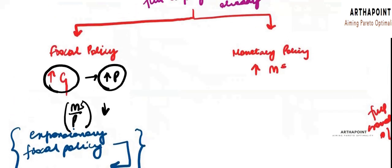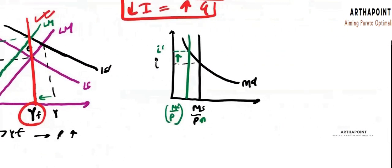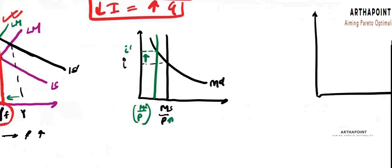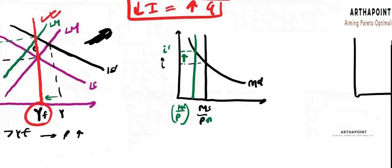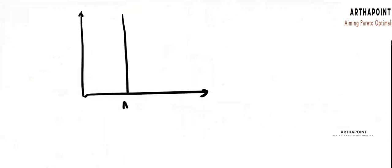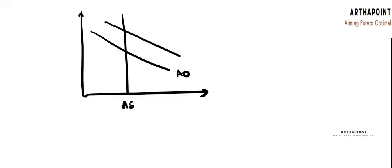Now let's talk about the monetary policy. Supposedly, instead of fiscal policy, you start with a monetary policy. When we were talking about the fiscal policy, what happened in the AD-AS phase? AS was vertical because you were always at full employment level of output. This was your initial AD, and then AD shifted to the right because there was an increase in G, which led to an increase in prices. This happened as part of the fiscal policy.